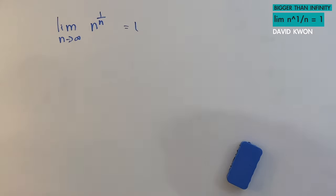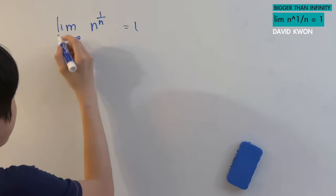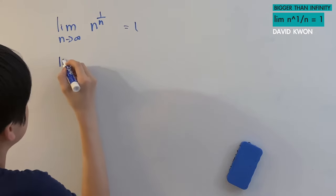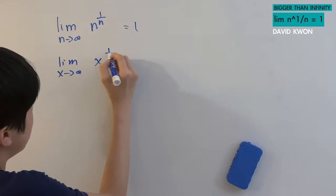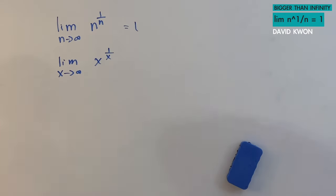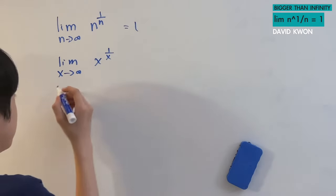And first to do this, I will change the variables n to x, which then we would get this. Nothing has changed, they are the same thing. And then, after we've done this,